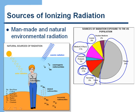One interesting source is internal. It turns out that elements with radioactive isotopes give off ionizing radiation. Some of the potassium we take in naturally in our food is radioactive, and that potassium gets built into your body and gives off ionizing radiation. So we can't avoid that — it's just part of our natural environment.